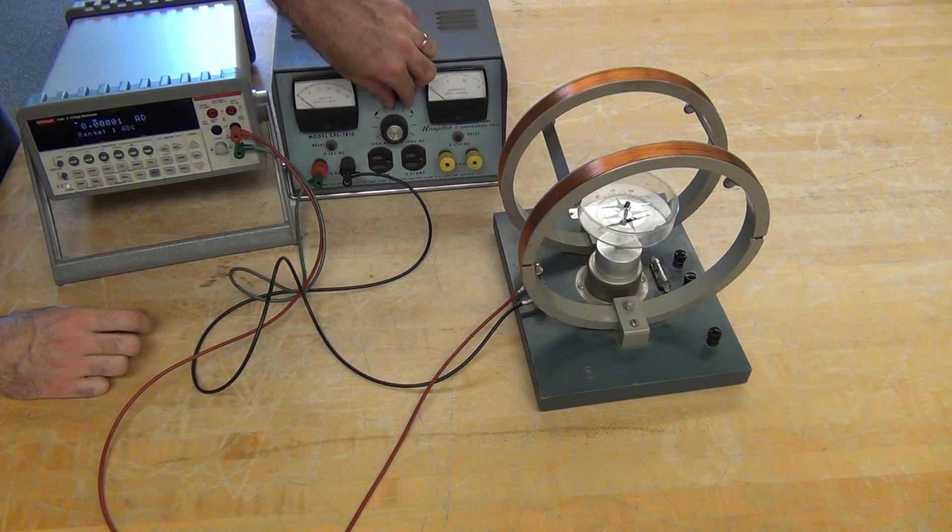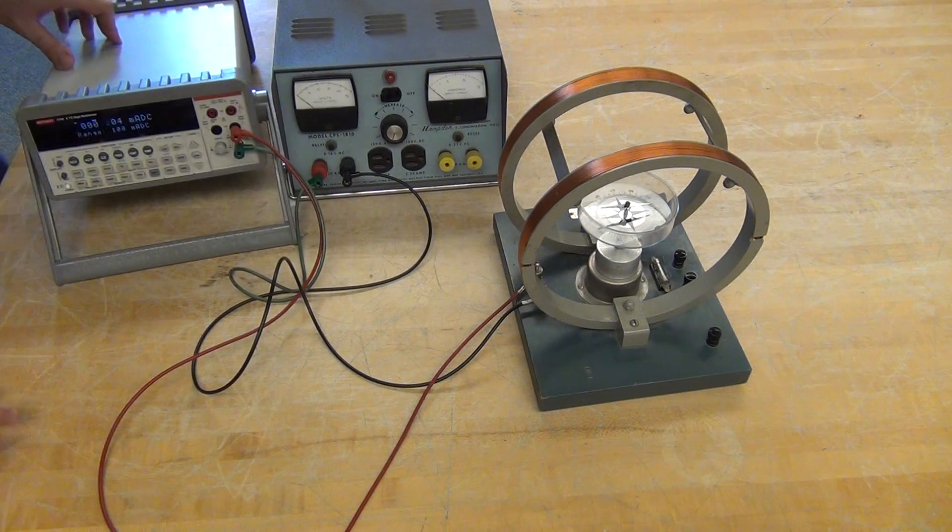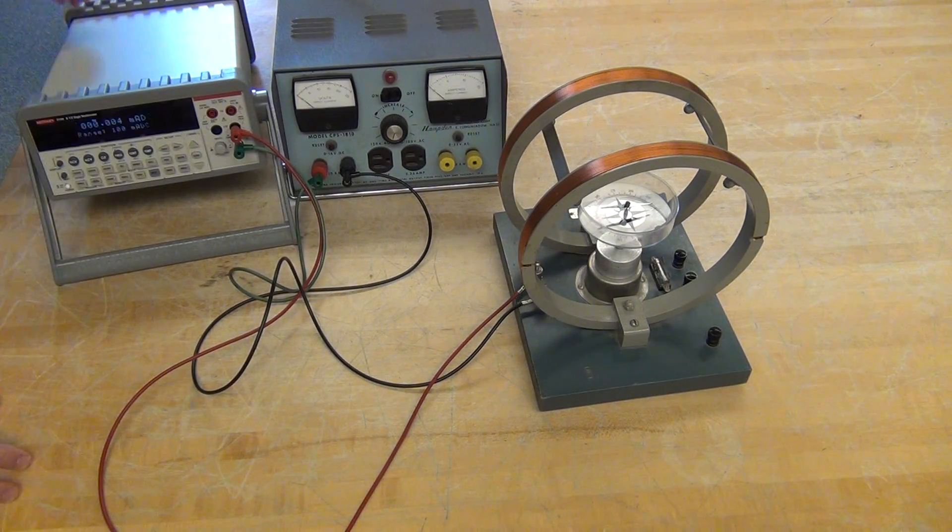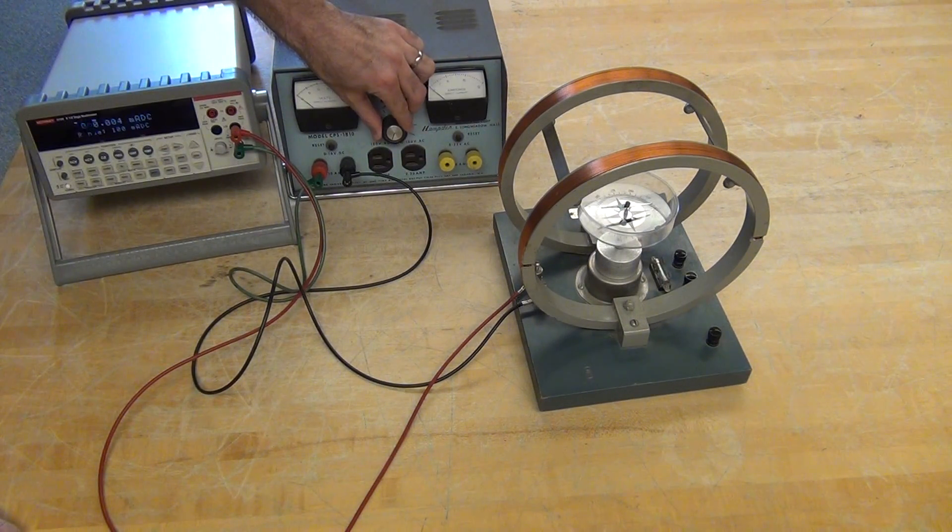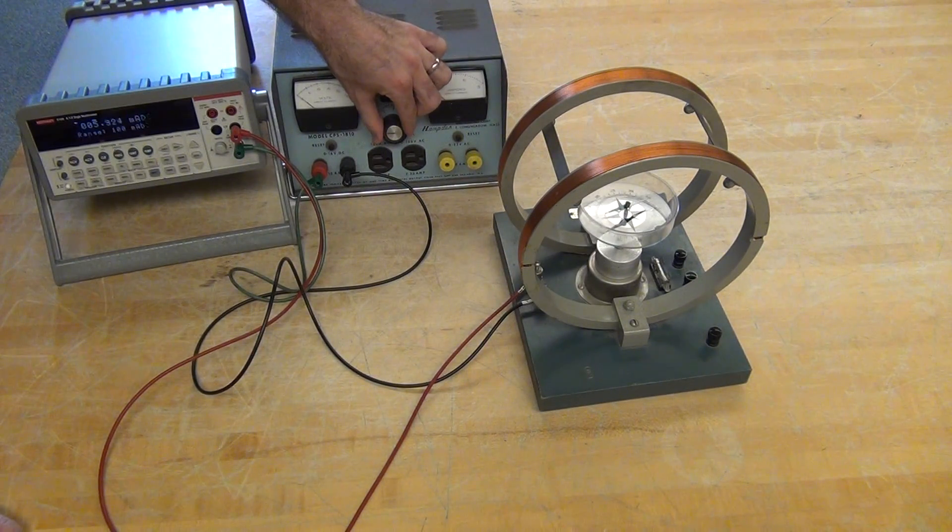I can turn this back on, drop my range down to 100 milliamps. And as I slowly increase the current, we'll get a deflection of our compass needle.